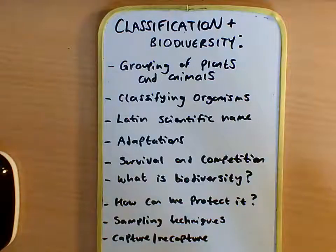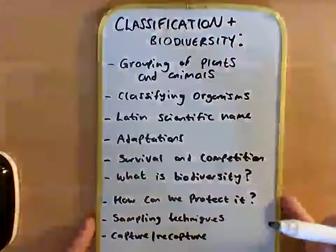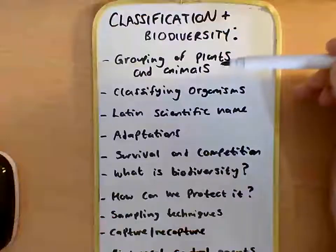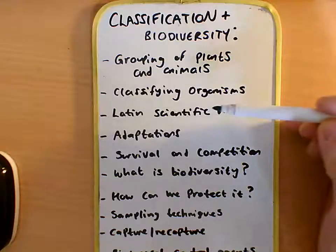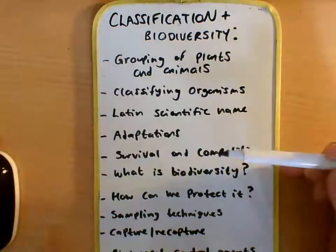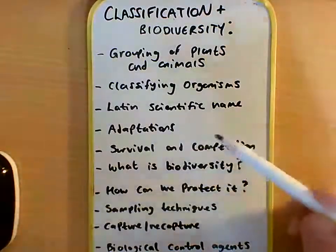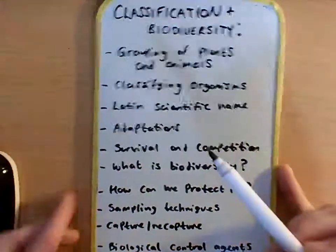Okay year 10, so we're going to have a look at the first topic from year 11. It's called classification and biodiversity. We'll look at how we group plants and animals, how we classify them, their Latin names, adaptations, and what plants and animals need to survive and compete for. Then we'll look into what biodiversity is.